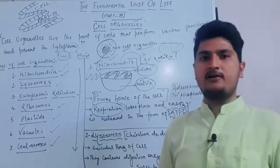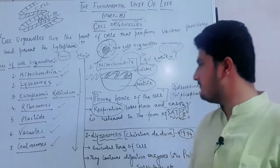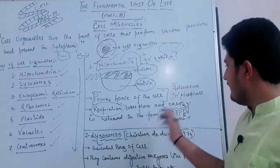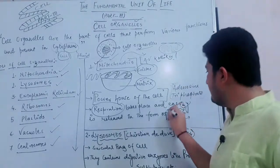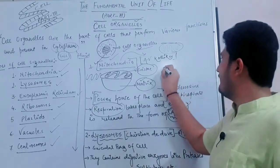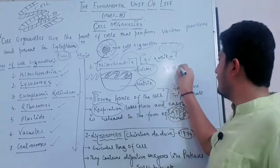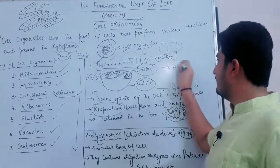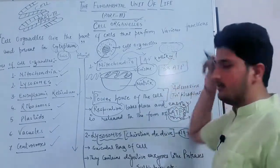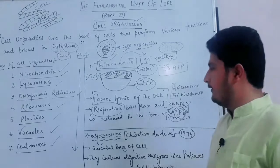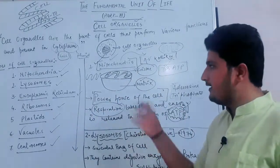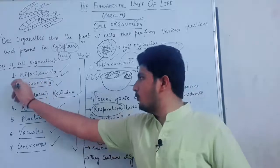When respiration takes place in one cell, 38 ATP is released. So remember that human beings have 38 ATP released per cell during respiration. This is specific to mitochondria. The next cell organelle is lysosomes.